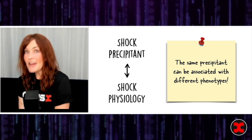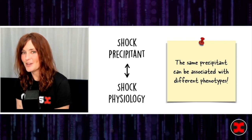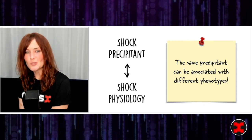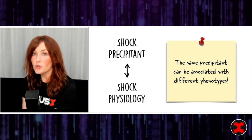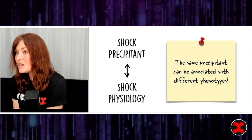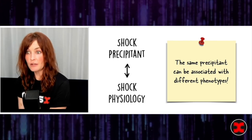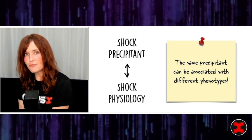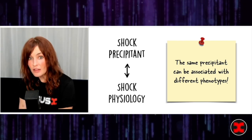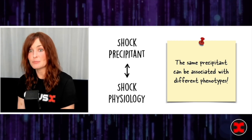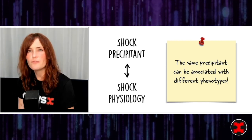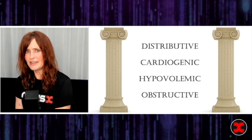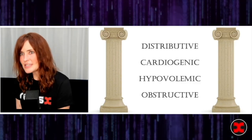We use 'septic shock' synonymously with 'distributive shock,' but it turns out the same precipitant — massive sepsis — can be associated with different shock phenotypes. We're seeing patients in cardiogenic shock who are actually vasodilatory; patients in septic shock who actually have profound right ventricular failure. The literature increasingly teaches us that different shock precipitants can cause distinctive subtypes of shock physiology. Once you divorce the idea that the same precipitant causes the same physiology, the four-category model stops making so much sense.